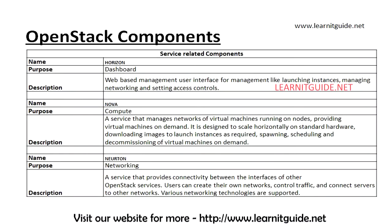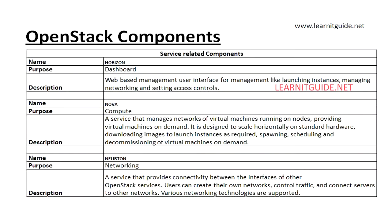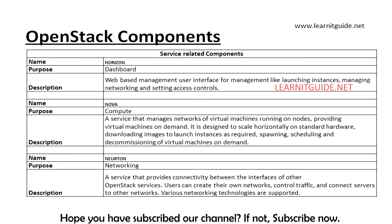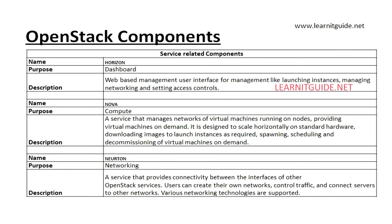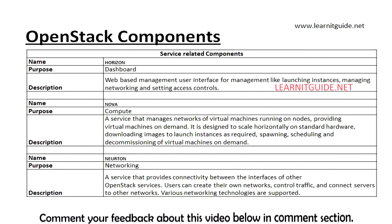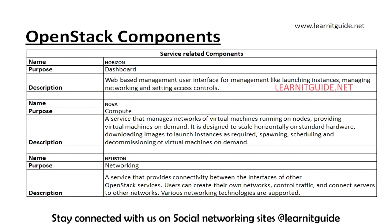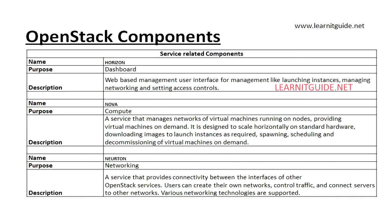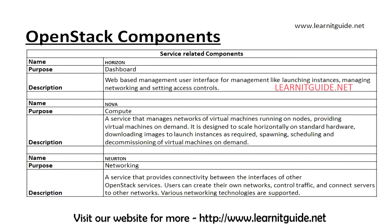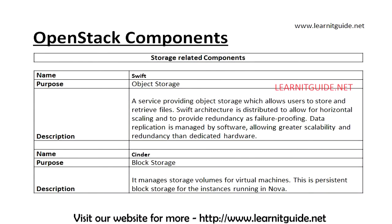The next one is Neutron. The purpose of the Neutron component is to provide networking infrastructure — a service that provides connectivity between the interfaces of each OpenStack service. Users can create their own networks, control traffic, and connect servers to other networks. Various networking technologies are supported in the Neutron component.